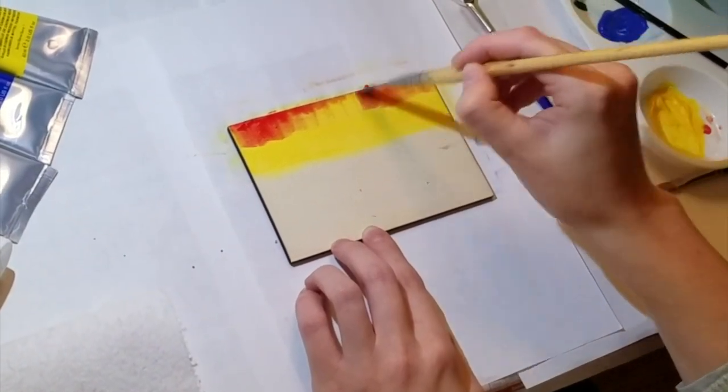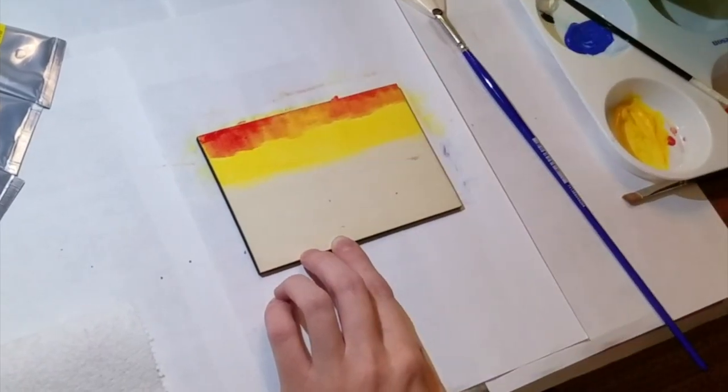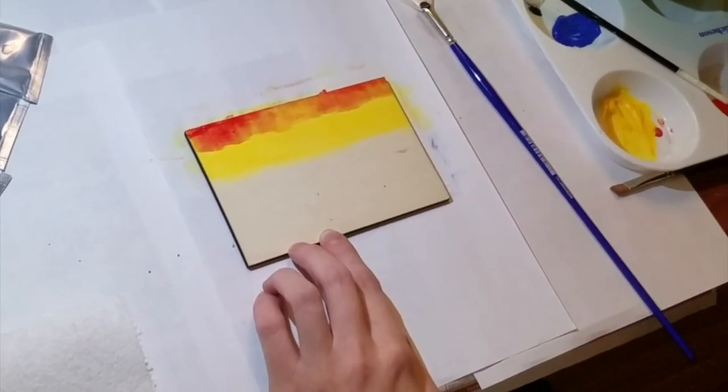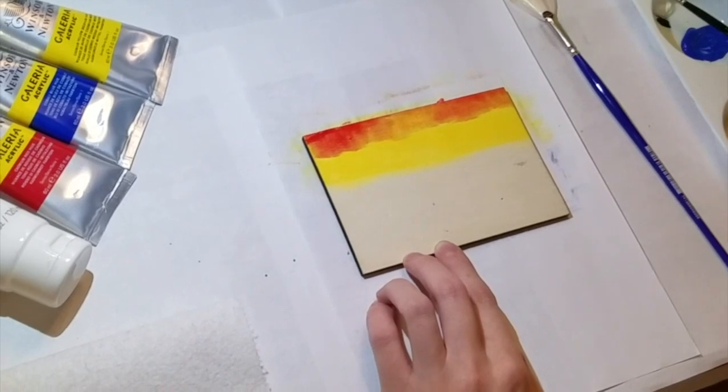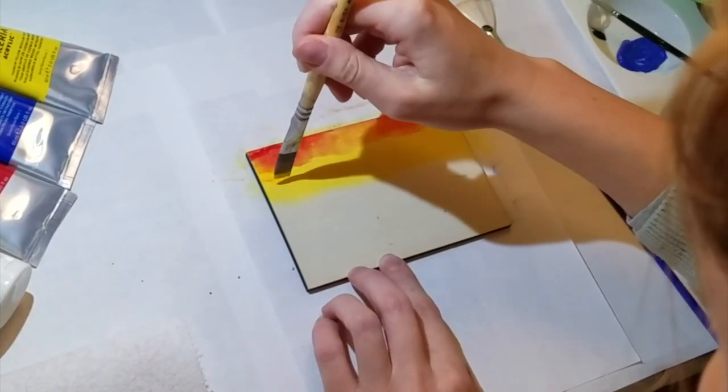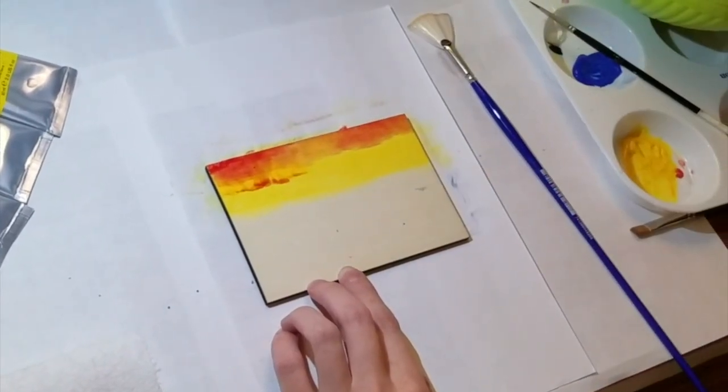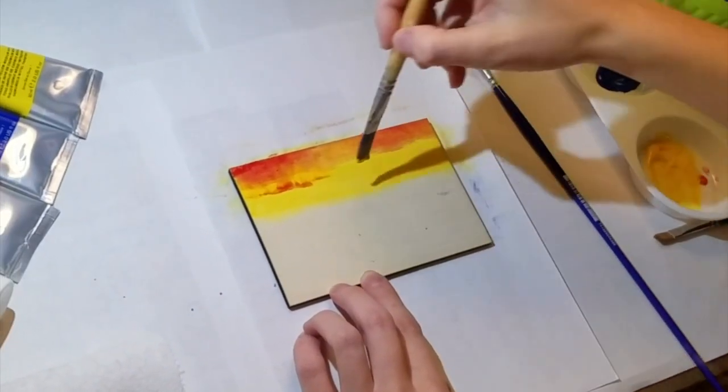Using again a decent amount of water here, trying to keep it wet. And then I went back in, and not adding water to the yellow, put a decent amount on my brush, starting in, going out, adding yellow to the bottom of the red.